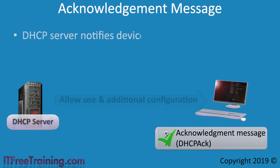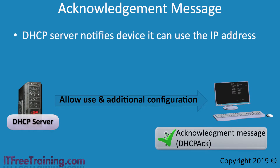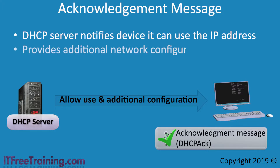The next message type is the Acknowledgement message. This is when the DHCP server informs the device that it can use the IP address. This could be a broadcast or unicast message. The Acknowledgement message also contains additional network configuration — for example, DNS and Gateway IP addresses. You will see in later videos that there is a lot of configuration that can be set using DHCP, and the Acknowledgement message provides this configuration.